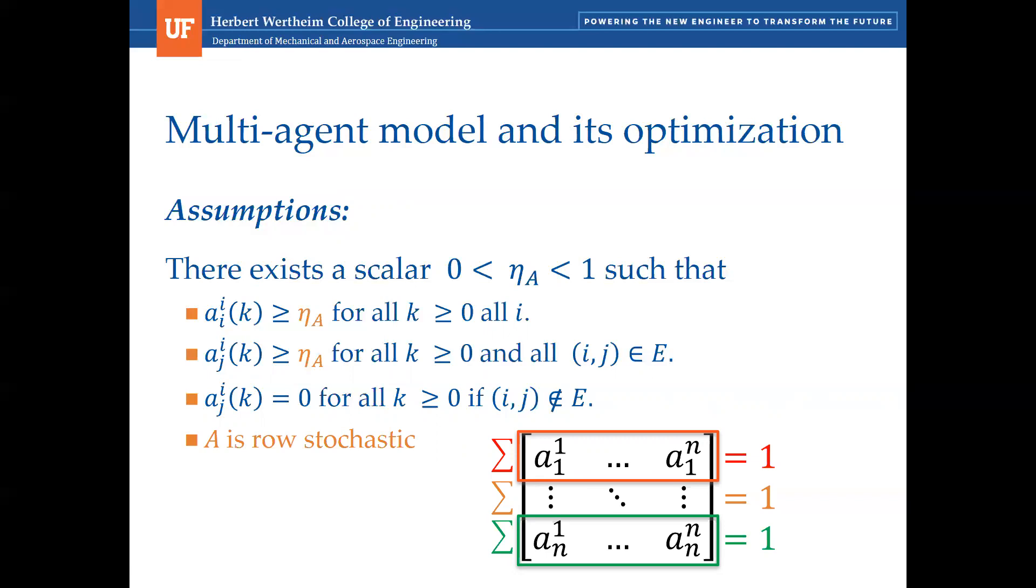Each row of A is the vector of weights that agent i assigns to the other agents in the decision vector update. In literature, the A matrix is usually doubly stochastic, the sum of each row and column equals to 1. There are some published rules to ensure the doubly stochasticity of A. But because we have a matrix that is row stochastic, we have proposed a rule to ensure that A is row stochastic and that will use agent's priorities W.